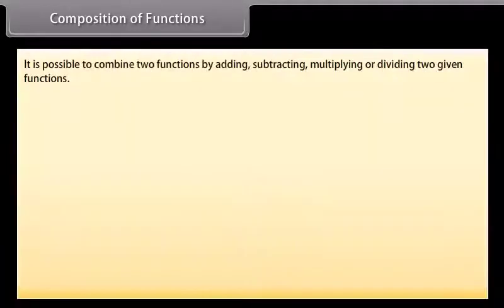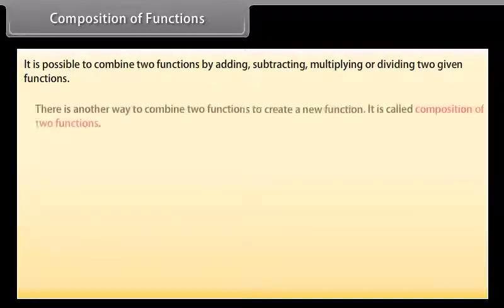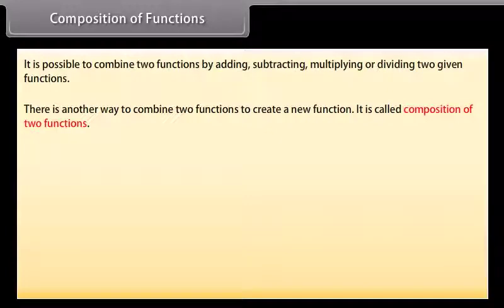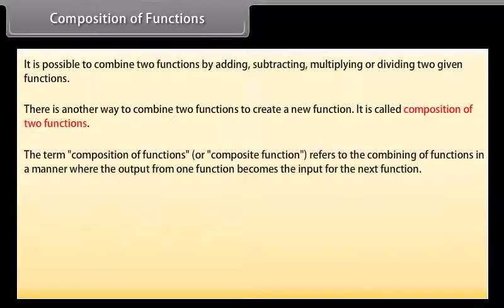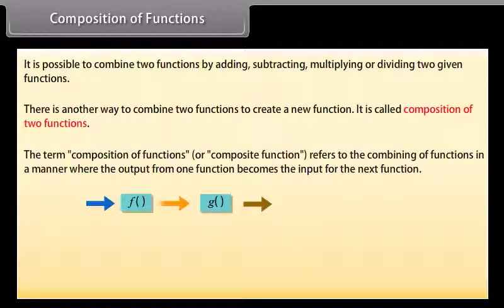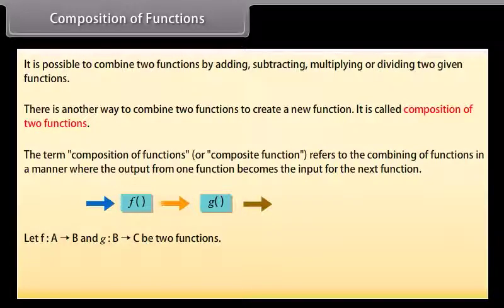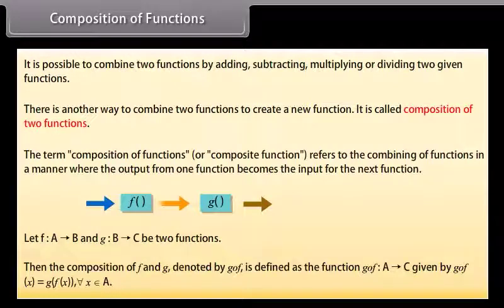It is possible to combine two functions by adding, subtracting, multiplying or dividing two given functions. There is another way to combine two functions to create a new function — it is called composition of two functions. The term composition of functions refers to the combining of functions where the output from one function becomes the input for the next function. Let function f from A to B and function g from B to C be two functions. Then the composition of f and g, denoted by g∘f, is defined as the function from A to C given by g∘f(x) = g(f(x)) for each x belonging to A.